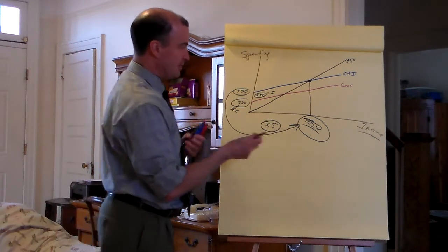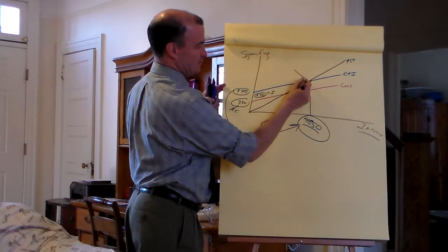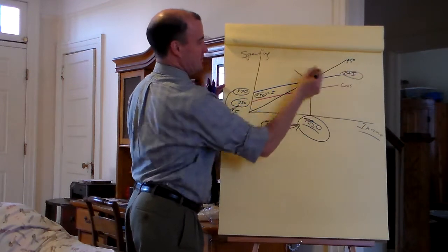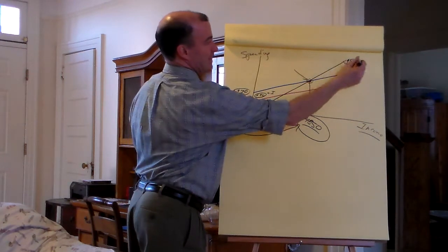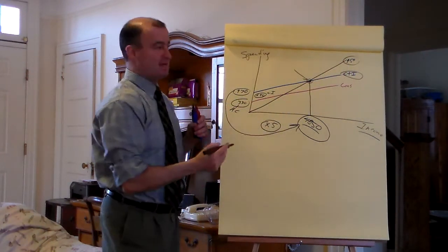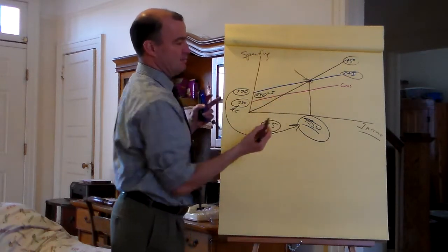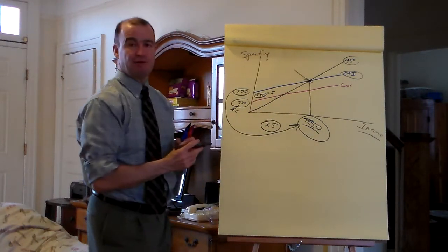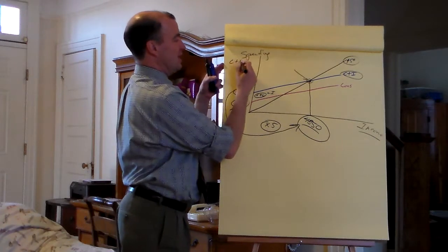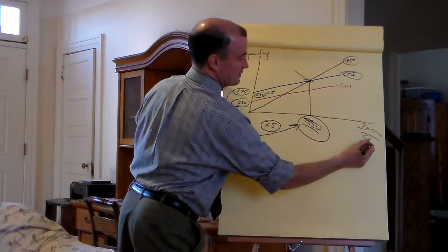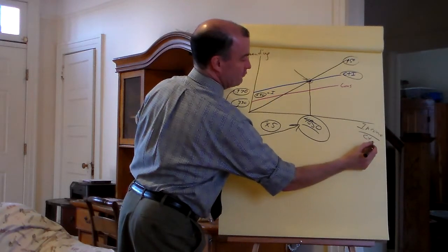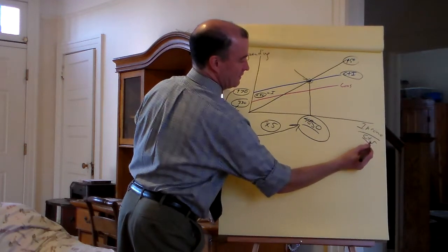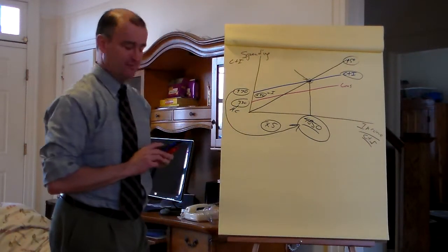How do I know that's equilibrium income? Because at that point where C plus I intersects the 45-degree line — that's got to be it. It's got to be where spending and income are equal. The C plus I will equal the C plus S, and I'm going to prove that on the picture.